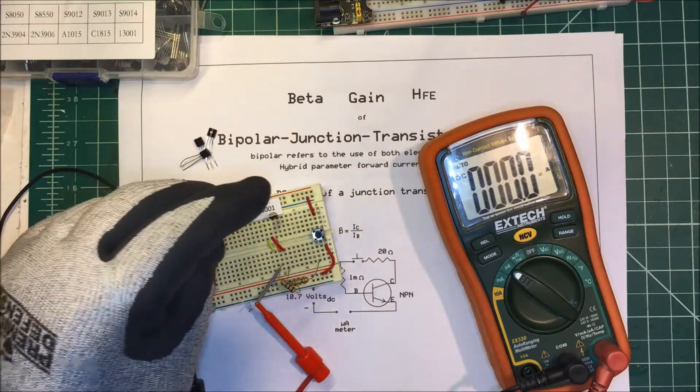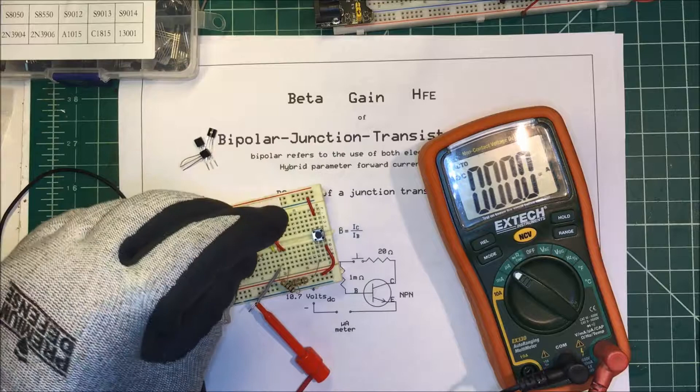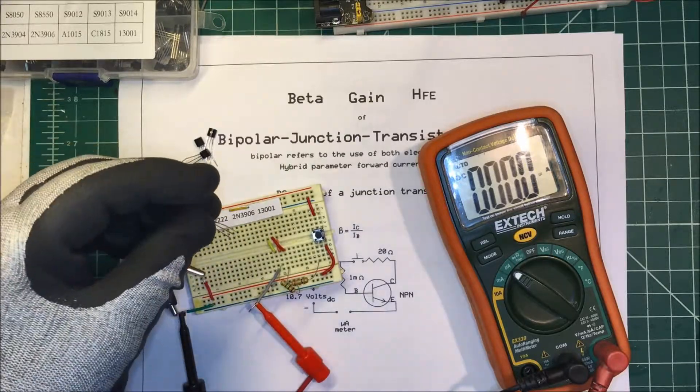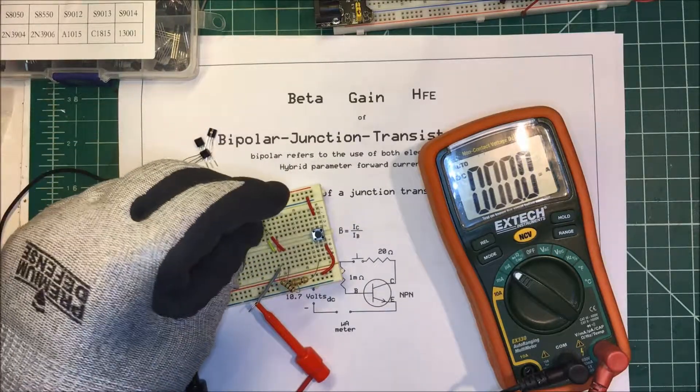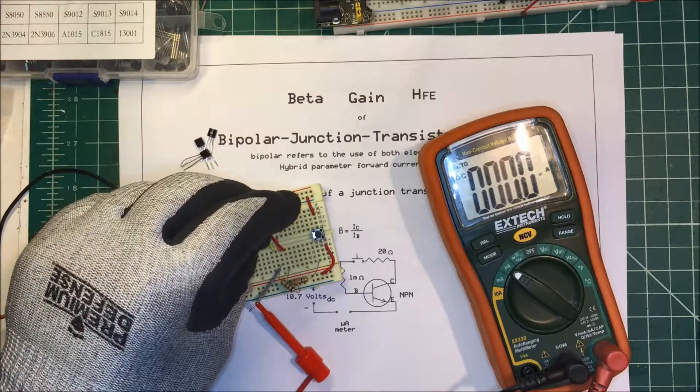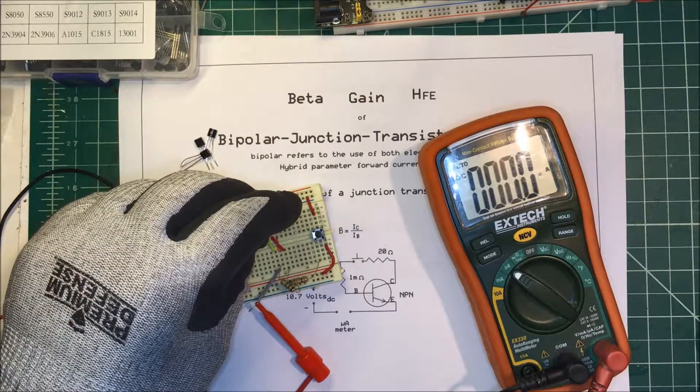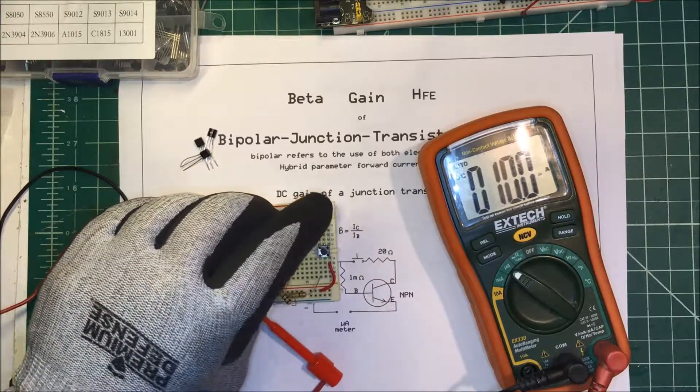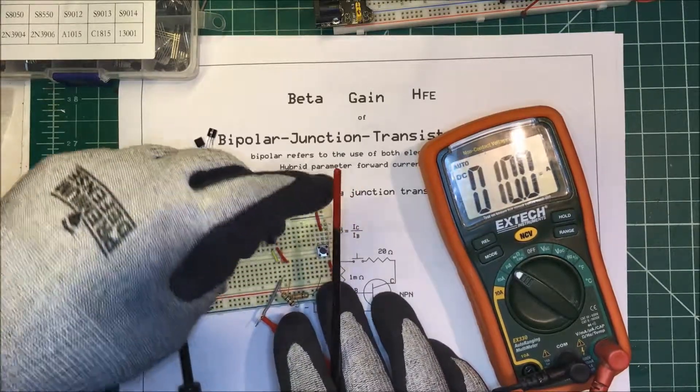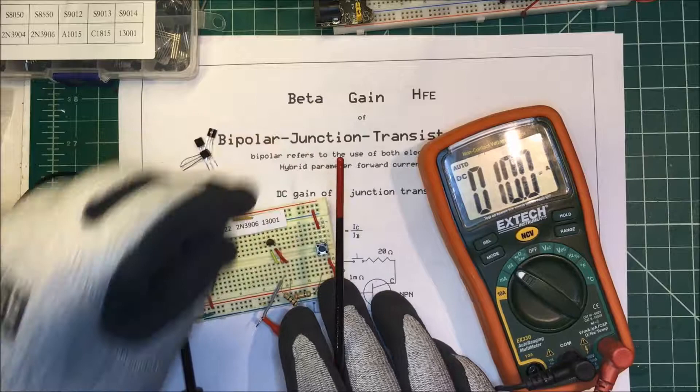Now this one's a 13001, and they don't have much gain. The way they're set up is different—the base and the emitter are different. On this one here, the base is on number three, so I've got it changed around here a little bit. I'll put that in there.